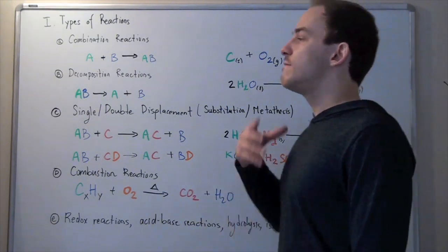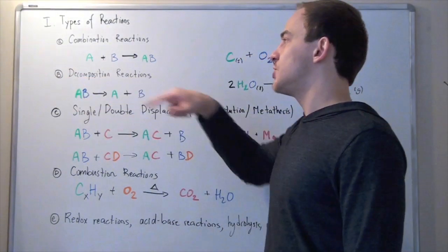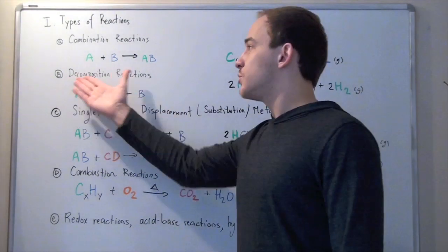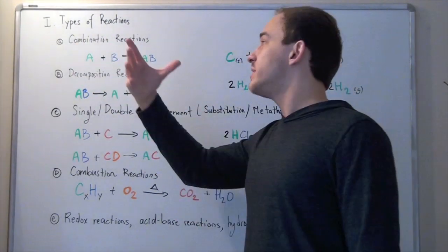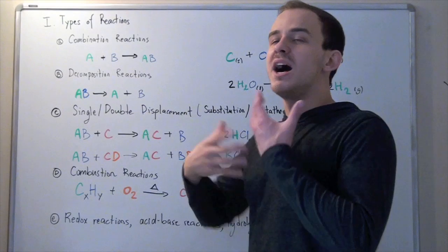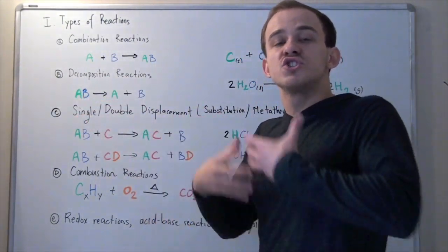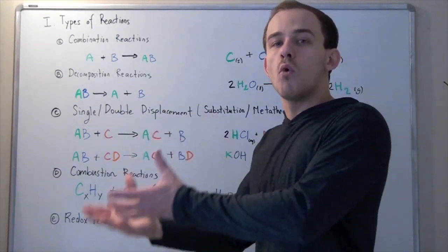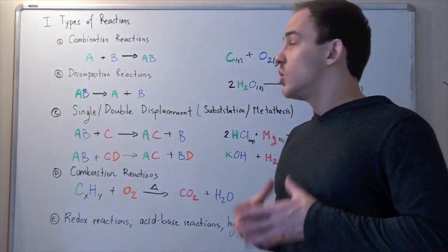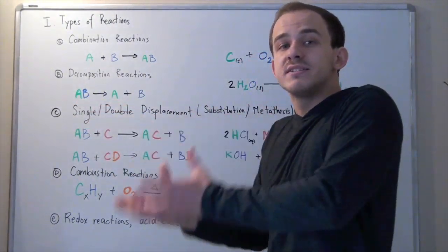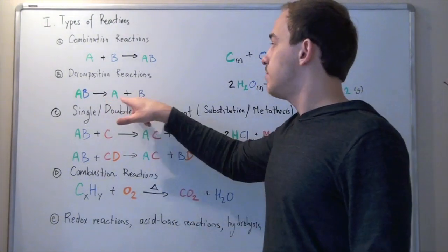Now let's look at a second type: decomposition reactions. Decomposition reactions are essentially the reverse of combination reactions. Where in combination reactions two reactants combine, in decomposition reactions a reactant decomposes or dissociates into two or more new compounds. In our hypothetical example, reactant AB breaks down or decomposes into two new products, A plus B.